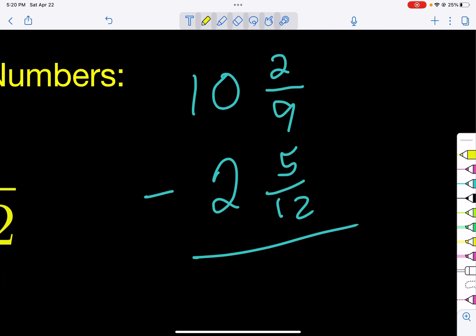Think: what do I multiply 9 by to get 36? That'd be 4. Do that on top and bottom. And on the bottom here, what do we multiply 12 by to get 36? That would be 3. So multiply that on top and bottom. Let's see what we get. That's going to be 8/36, and this one here is going to be 15/36. Okay, so we've got our common denominators. The next